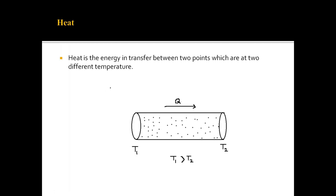Heat is a word we have used a lot throughout this video. Here is a microscopic interpretation of heat. Consider a wire — if you apply positive potential on one end and negative potential on the other, electric current flows. Similarly, if you have two temperatures T1 and T2, the energy which is in transfer between these two points is called heat.